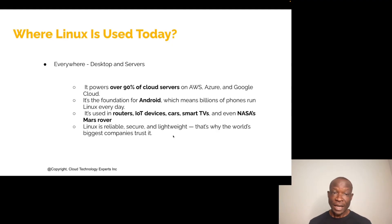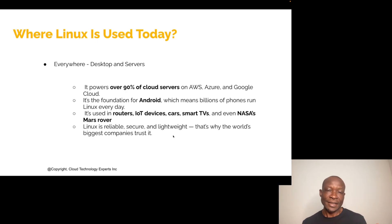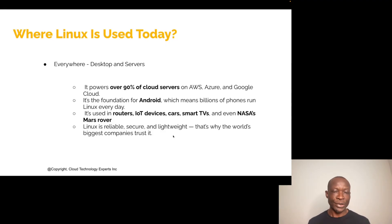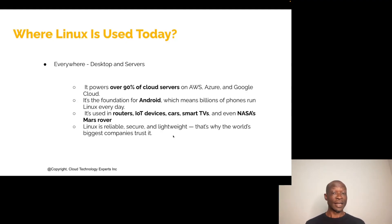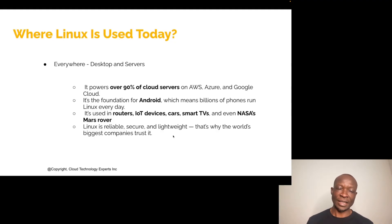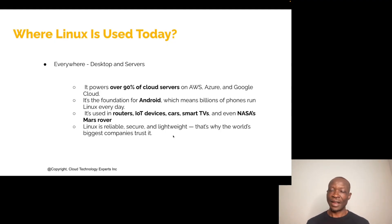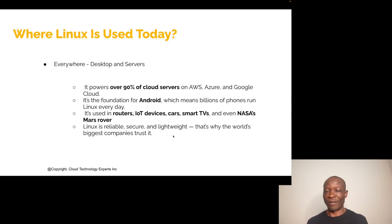Where is Linux used today? Pretty much everywhere — desktops, laptops, servers in data centers, and cloud servers like AWS, Azure, Google Cloud, and IBM Cloud. Over 90% of cloud servers use Linux. It's the foundation of Android, with billions of phones running on it every day. It's also used in routers, IoT devices, smart TVs, and even NASA uses it on Mars. Linux is everywhere because it's reliable, secure, and lightweight — it doesn't require a lot of resources to run.